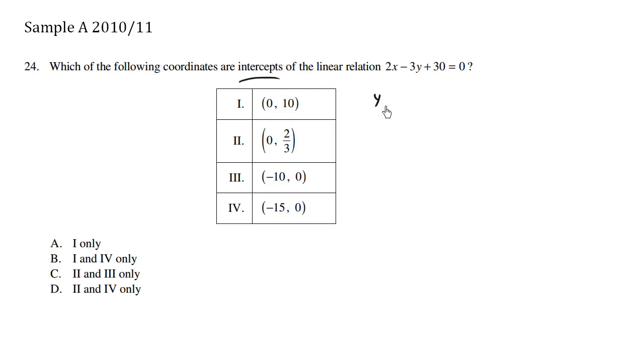Let's solve for the y-intercept. To find the y-intercept, we simply set the other variable to 0, so we're going to set x equals 0. So we're going to say 2, where x is 0, minus 3y plus 30 equals 0.